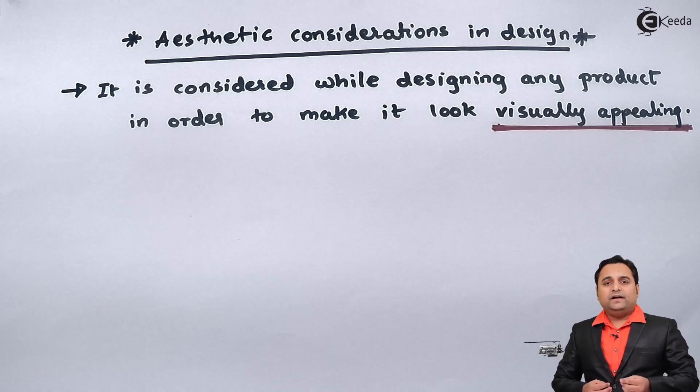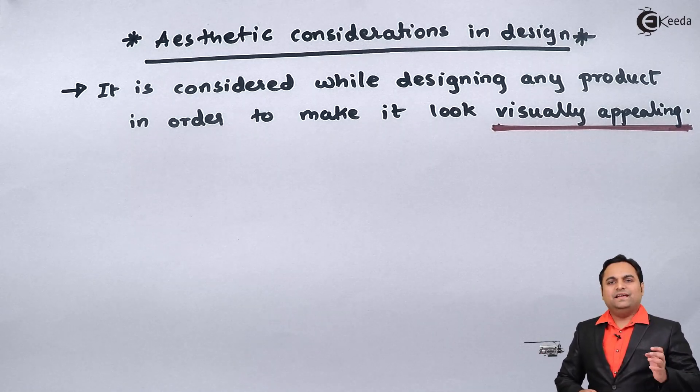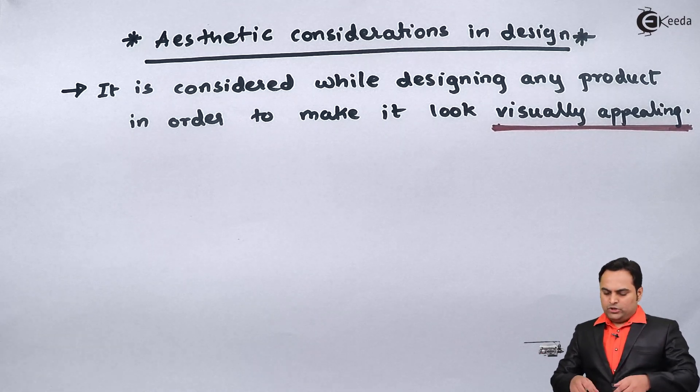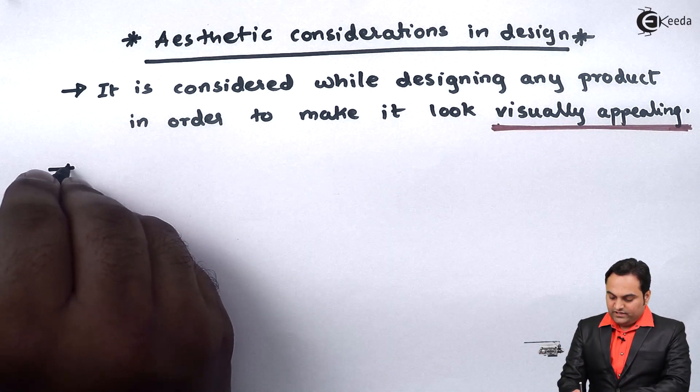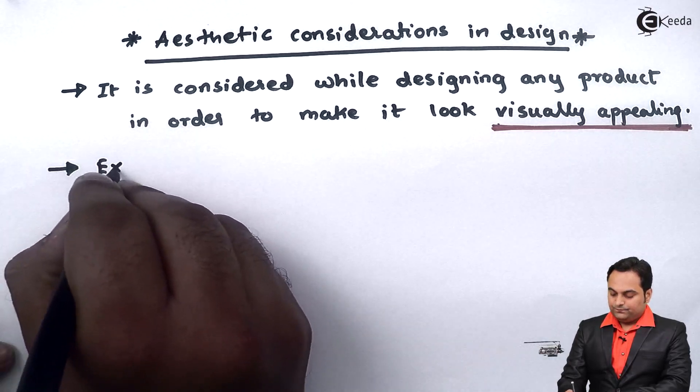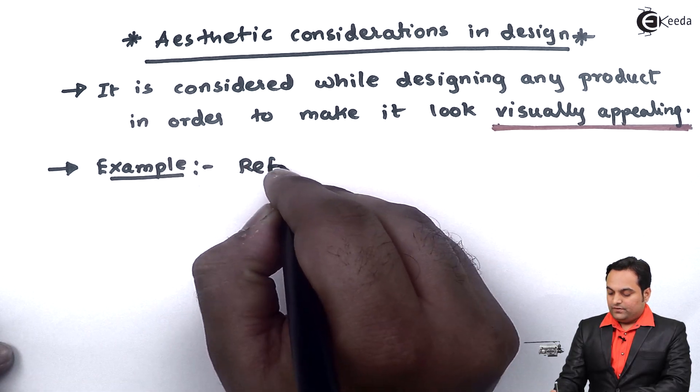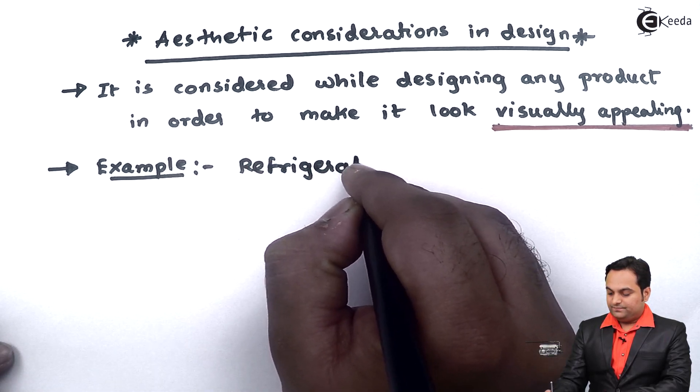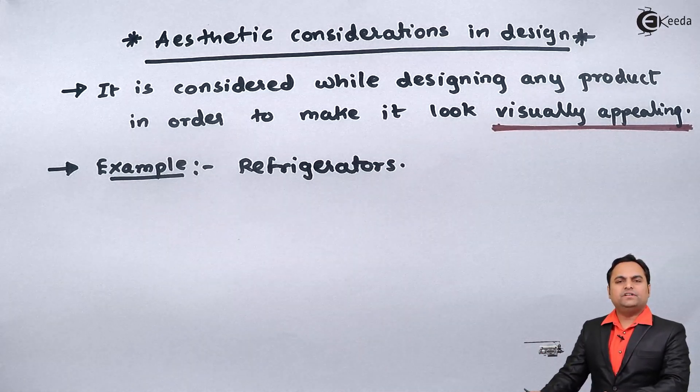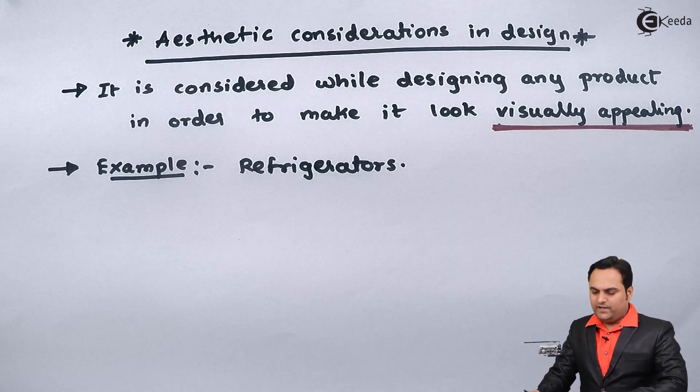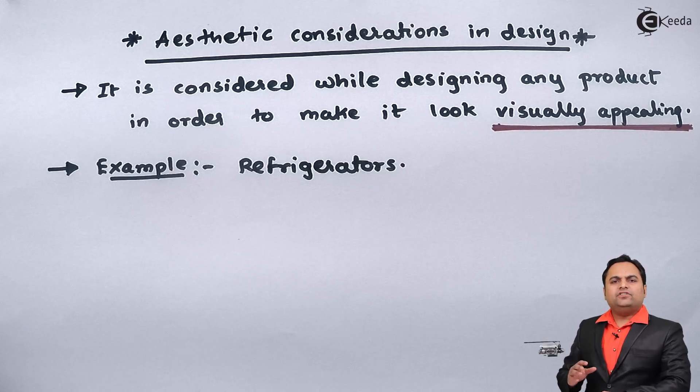and from that we select those which are functional as well as aesthetically appealing. So here in aesthetic consideration, I can give the example of refrigerators. Why I have given this example? Because it is one of the most commonly used appliances today. Now when we are talking about refrigerators, each refrigerator